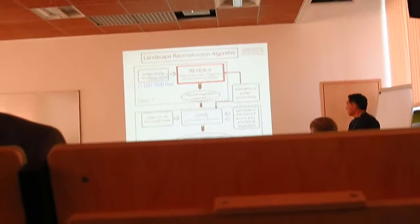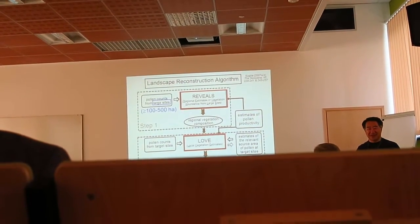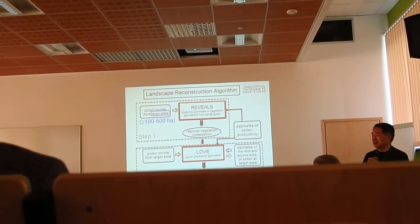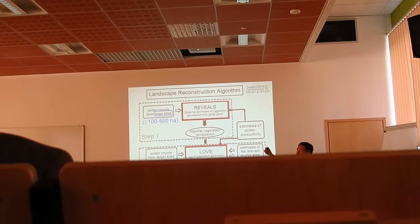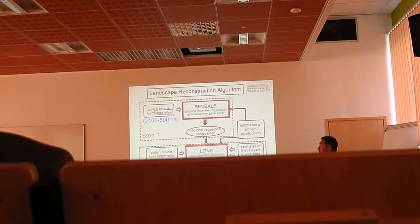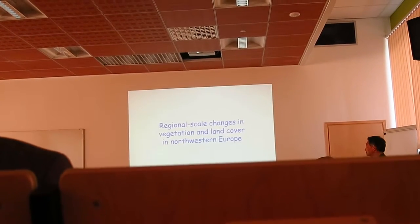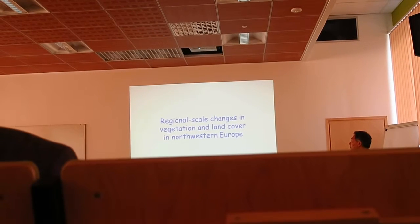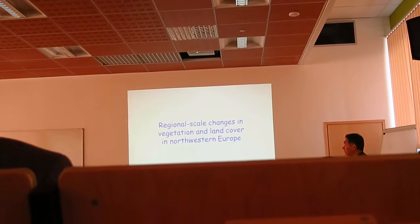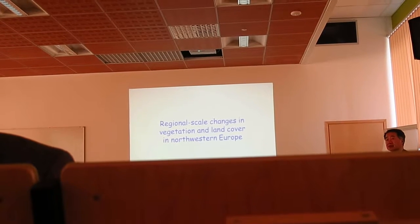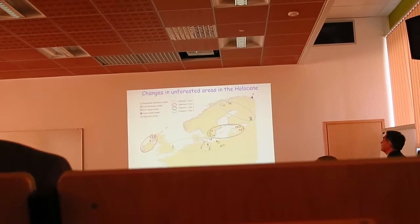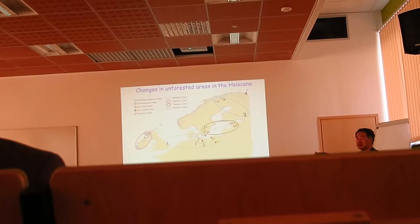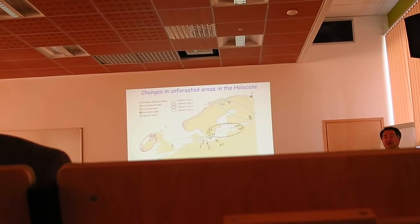This model is called the LVE model — Local Vegetation Estimate. Today I'm going to show some very recent results using this REVEALS model in Europe and also in part of North America. Over the last 10 years, we have been working together with people from different countries in Europe to estimate changes in vegetation cover in many parts of Europe — not pollen proportions, but vegetation cover based on the model I developed.